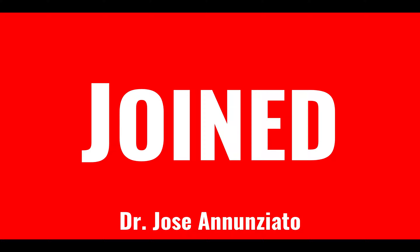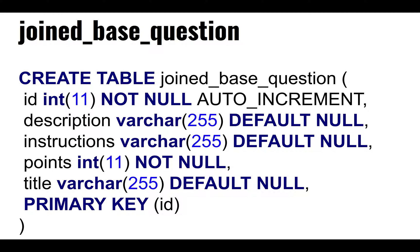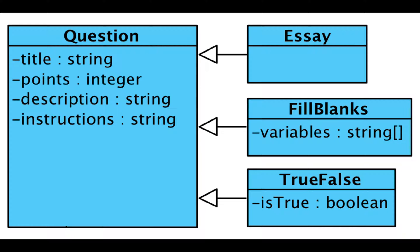Let's take a look at the first strategy — the joined strategy. What it tries to do is be as faithful as possible to the class diagram. If there are four classes, there should be four tables. In the object world, the fill-in-the-blanks subclass inherits the title, points, description, and instructions from its parent class.